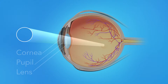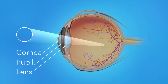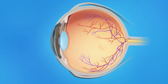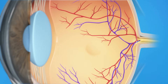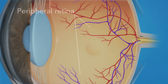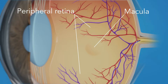Light rays enter the eye through the cornea, pupil, and lens. These light rays are focused on the retina, the light-sensitive tissue lining the back of the eye. The retina has two areas: the peripheral retina, which gives us our side or wide-angle vision, and the macula, the small area at the center of the retina. The macula gives us our pinpoint vision, allowing us to see detail clearly.